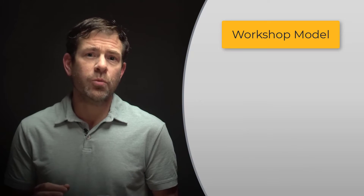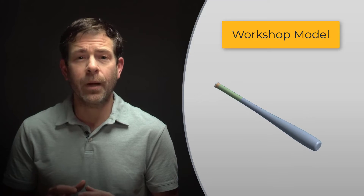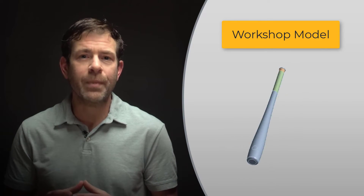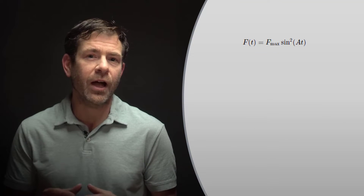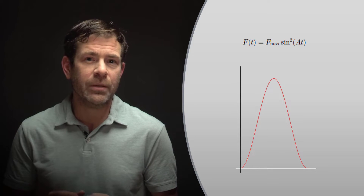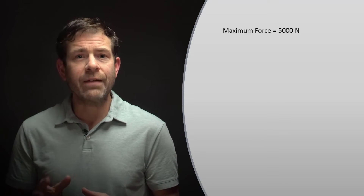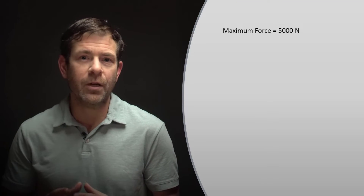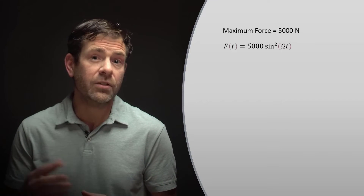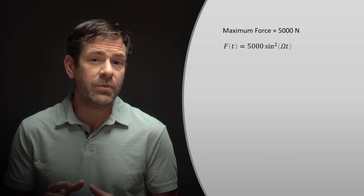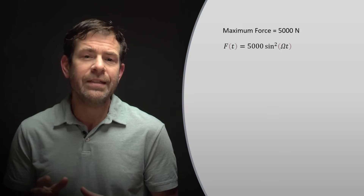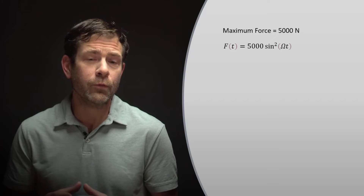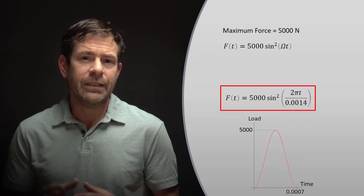Now let's get into our workshop model. For this workshop, we will simulate a hollow aluminum baseball bat being impacted by a ball. We won't model the ball impacting the bat, but rather we will specify an impulse load onto a small patch of surface on the bat. From literature, the force time history is characterized by a half sine squared function. The complete time of the impact is 7×10⁻⁴ seconds, or just under 1 millisecond. We assume a max force of 5000 newtons. Our force equation is 5000 times sine squared of ωt, where ω equals frequency times 2π, or (1/period) times 2π. Since our impulse is one half of a sine wave, the period is 2 times 7×10⁻⁴, or 1.4 milliseconds. Now let's get started in ANSYS Mechanical.